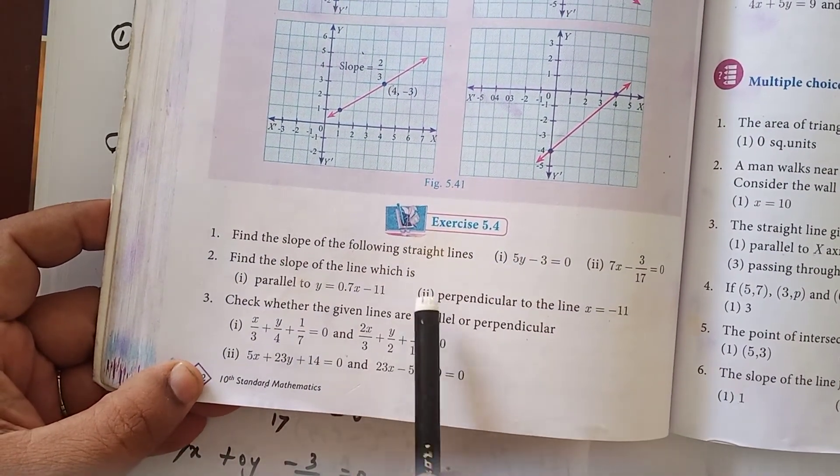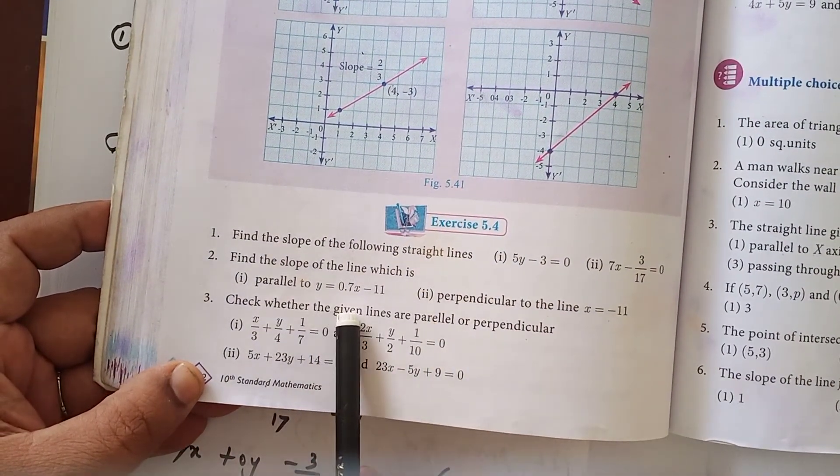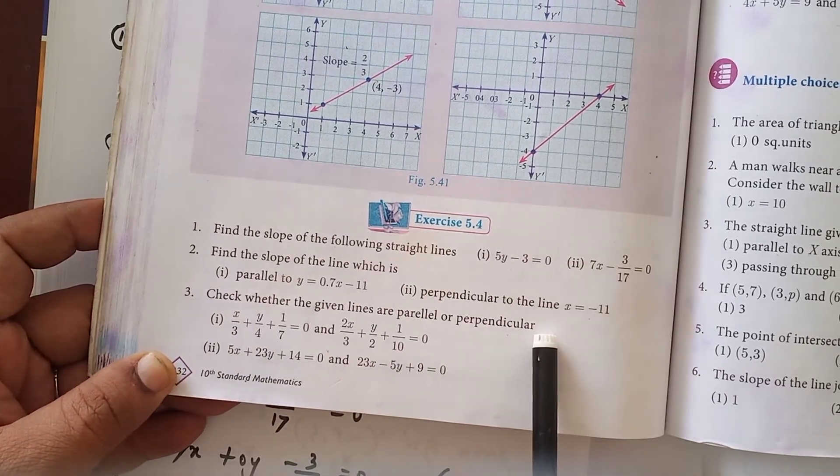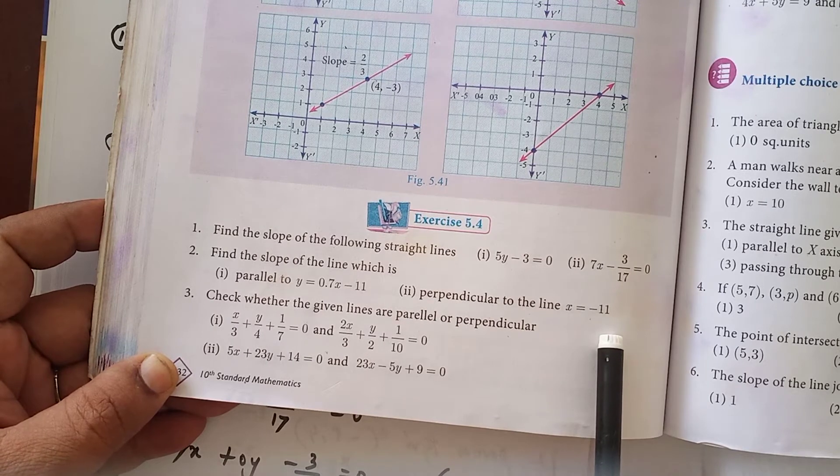Find the slope of the line which is parallel to the line y equals 0.7x minus 11 and perpendicular to x equals minus 11.